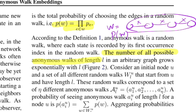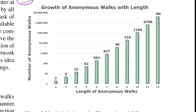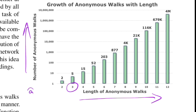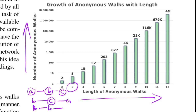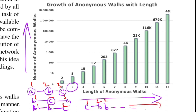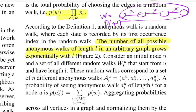The number of all possible anonymous walks of length L in an arbitrary graph grows exponentially with L. On a chart with the x-axis as walk length L and y-axis as total number of possible walks: at L=3 you have 5 unique patterns (e.g., 1,2,3 and 1,1,2 and 1,2,2 etc.), and by L=12 the number reaches as high as 4 million. You can easily see this is going exponential. For example, different random walks like A,B,C or B,C,A or B,B,C all map to their respective anonymous patterns — at length 3 you get exactly 5 unique anonymous walks.